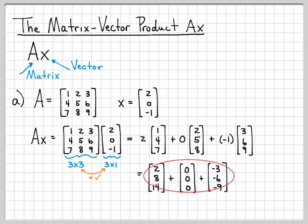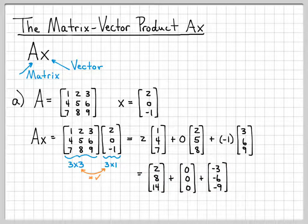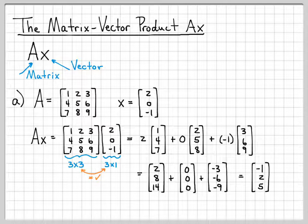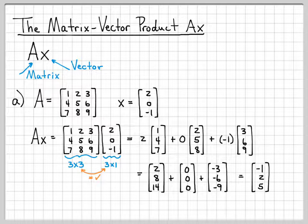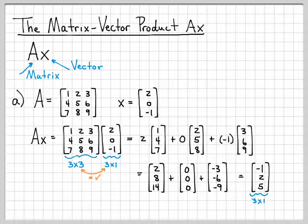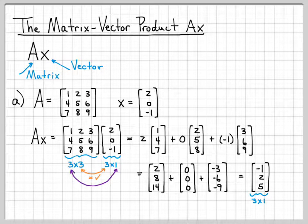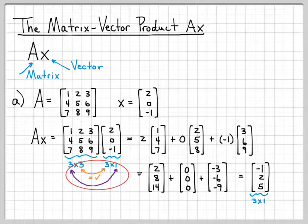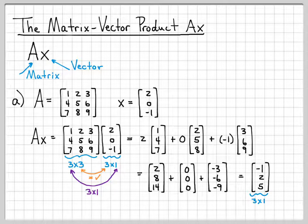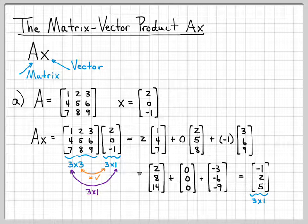Now I just need to add up three vectors. Well, that's easy. 2 plus a negative 3 is negative 1. 8 plus a negative 6 is 2. And 14 plus a negative 9 is 5. So we've computed the matrix-vector product Ax for this example. Note, our final answer here is a 3 by 1 vector. It has three rows and one column, which is exactly what we had over here as our outer dimensions, 3 times 1. The outer dimensions tell us the final size that we'll obtain when we're done with the multiplication.